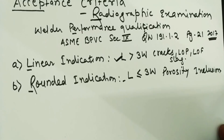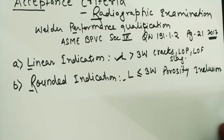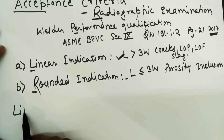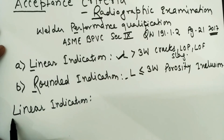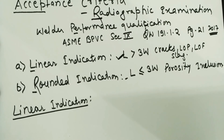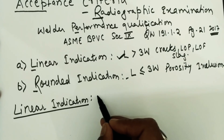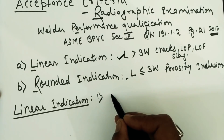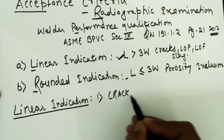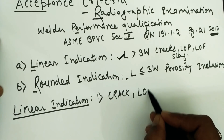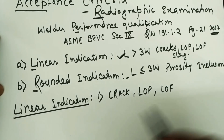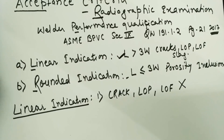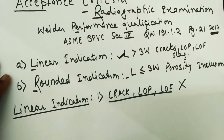Now we will proceed to the acceptance criteria for linear indication. Any type of crack, lack of penetration or incomplete penetration, and lack of fusion shall be rejected. These are not at all allowed.